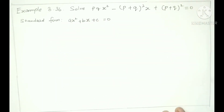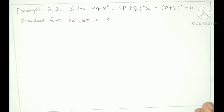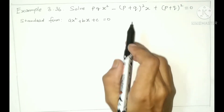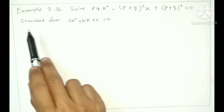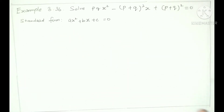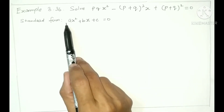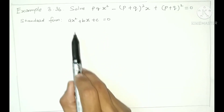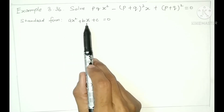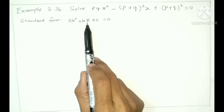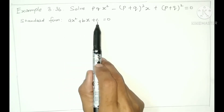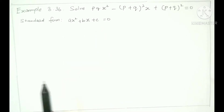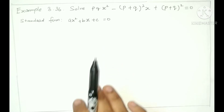So this is a quadratic equation. This is the standard form. The quadratic equation in standard form is AX² + BX + C, where X² is the term with one coefficient, X is the linear term, and C is the constant term. This is the standard form.